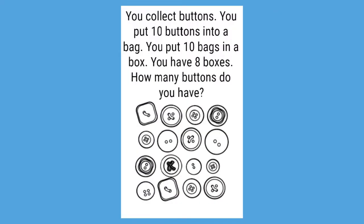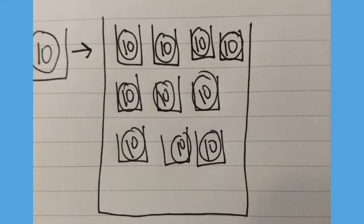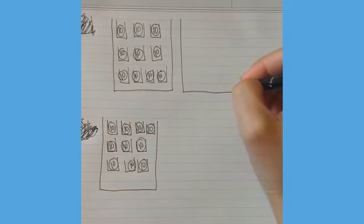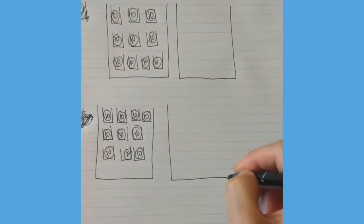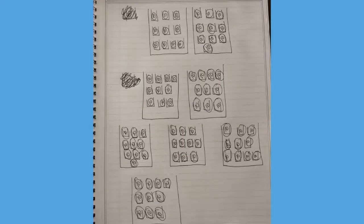Great job drawing with me, guys. Next, you have eight boxes, so now you're going to have to draw those big boxes with those ten bags and the ten buttons. All right, kiddos, so you're going to take this and draw it eight times. I already drew two boxes, so now I need to draw six more to get a total of eight boxes. You should have something that looks like mine. I have eight boxes with ten bags and ten buttons inside those bags.